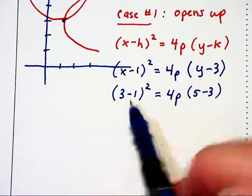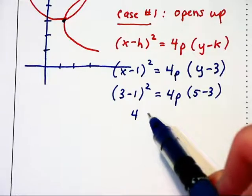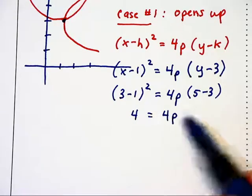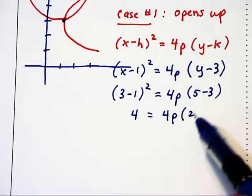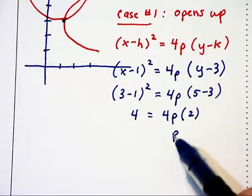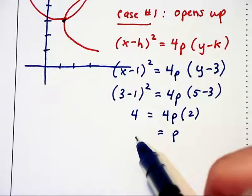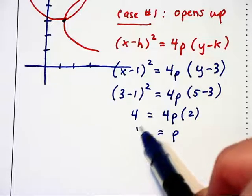So on the left, we have 2 squared, which is 4, equals 4p times 5 minus 3, which is 2. And dividing the 8 off of the right-hand side, we get p equals 1 half.